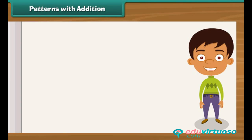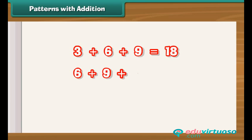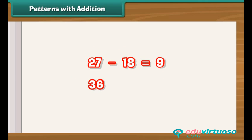Look at these sums — there is a pattern in them. 3 plus 6 plus 9 equals 18; 6 plus 9 plus 12 equals 27; 9 plus 12 plus 15 equals 36. We observe that the difference between two adjacent sums is 9: 27 minus 18 equals 9, and 36 minus 27 also equals 9.